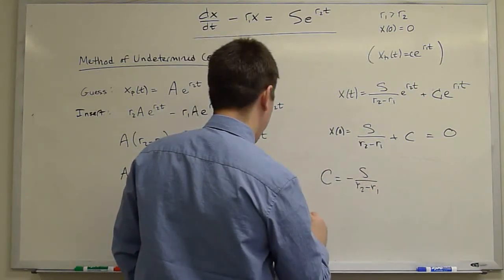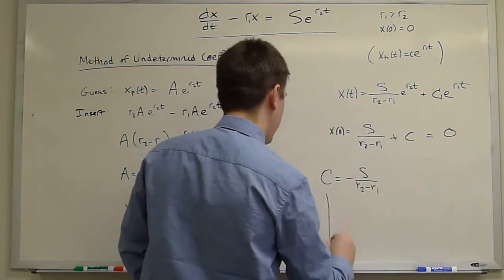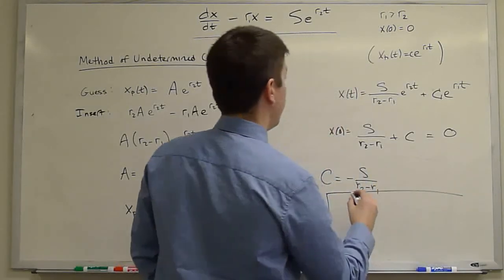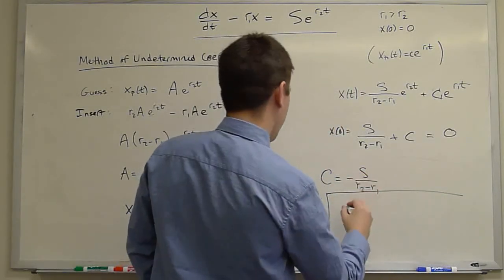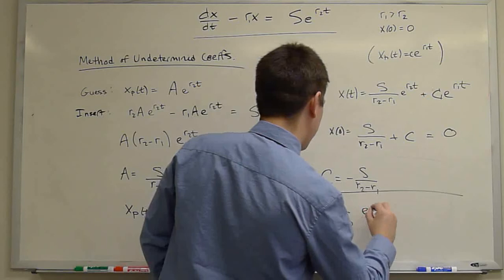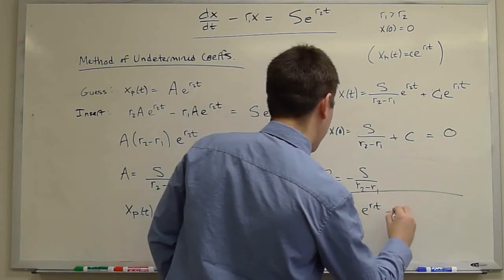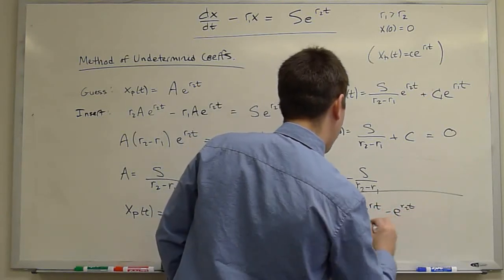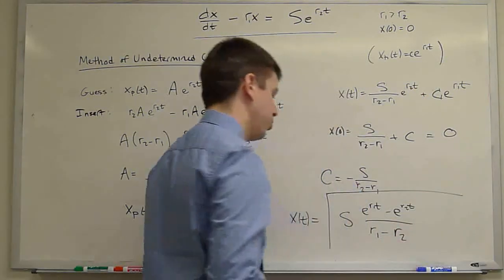And again, X sub t. I'll just write it in the last form that we obtained in previous problems. S e to the R1t minus e to the R2t over R1 minus R2.